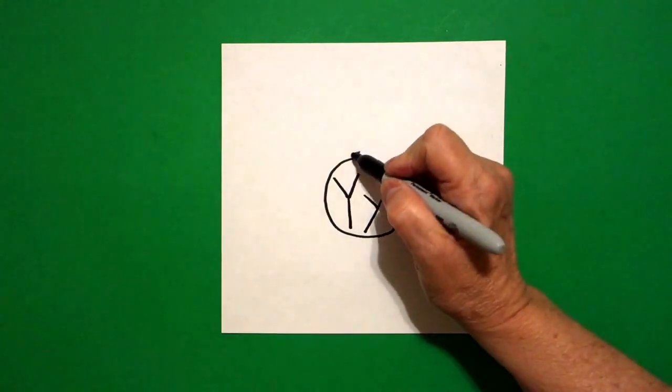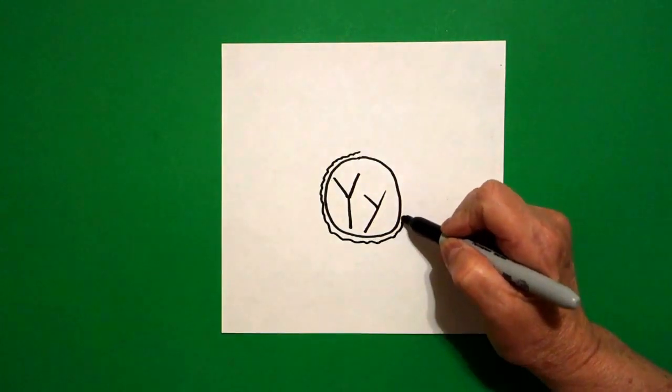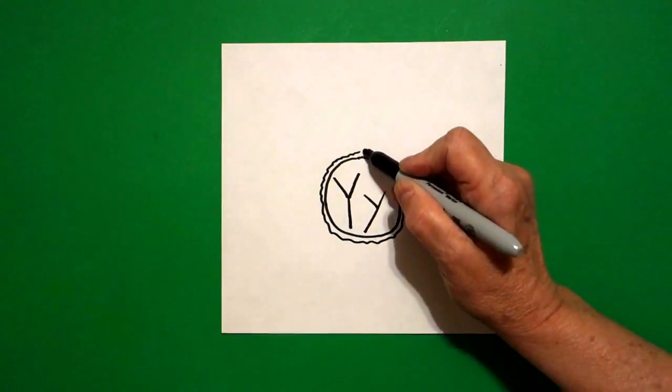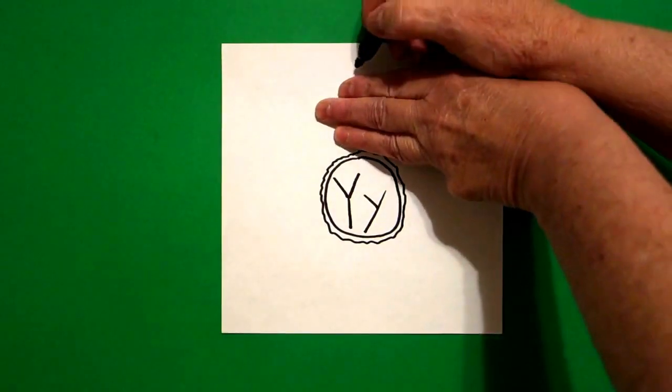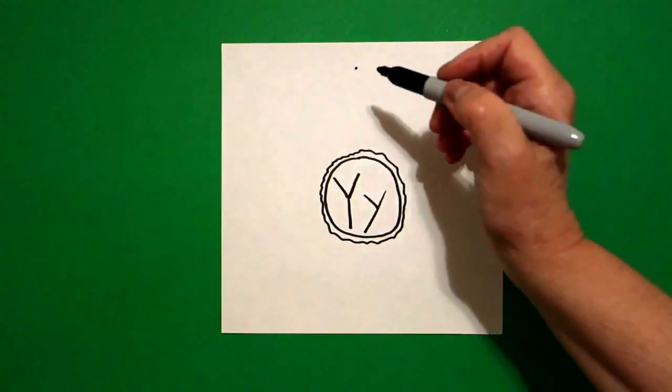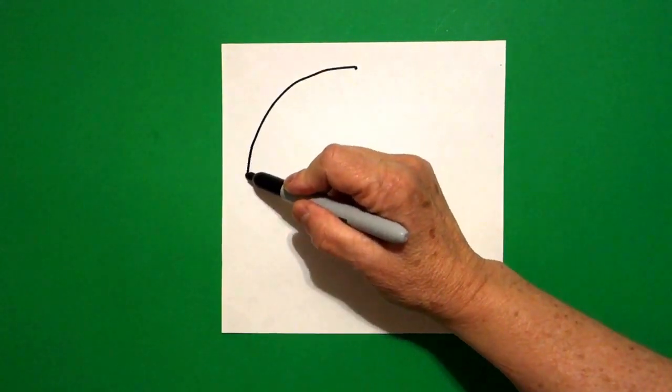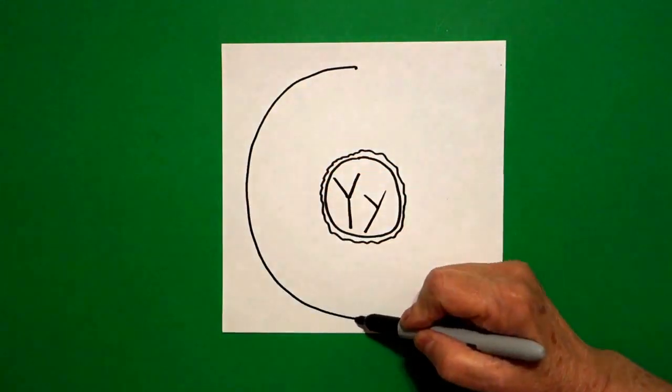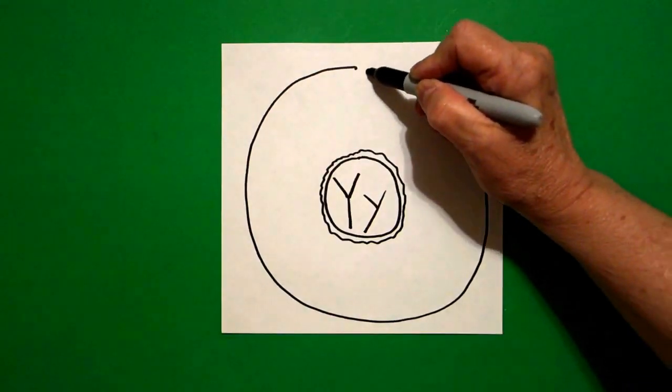Come back to the dot and draw a wavy, wavy, wavy line all the way around. Connect. Take three fingers from the top, put a dot. From that dot, I'm going to draw a big curve line down, around, up, and connect.